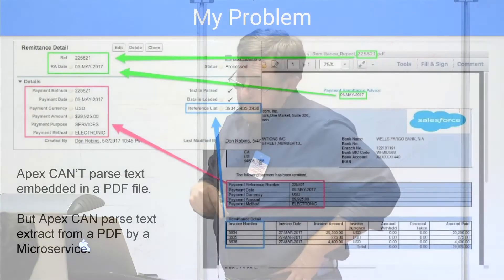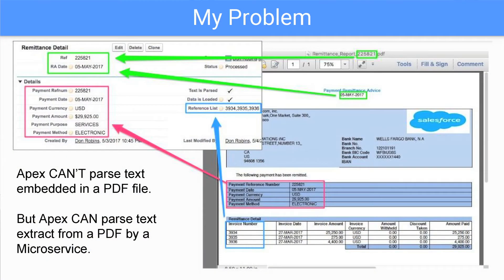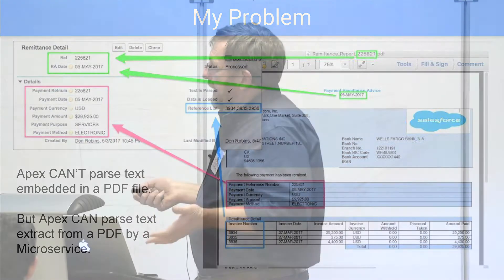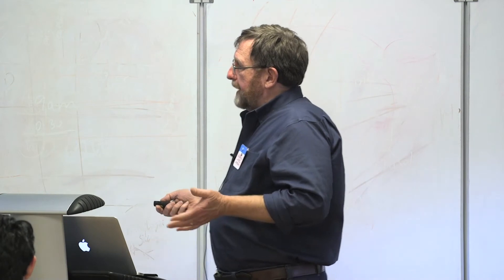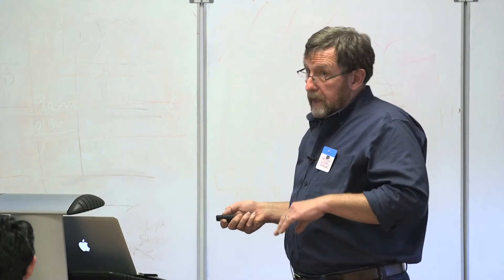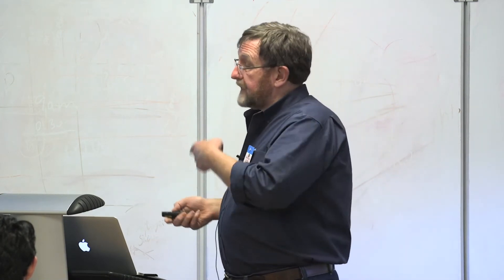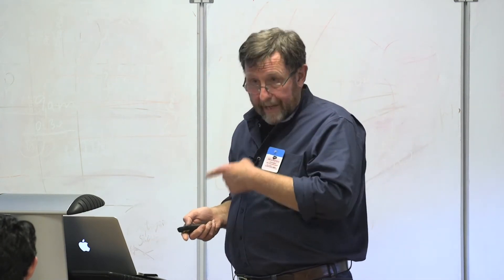You can use Visualforce to generate a PDF. I know somebody who actually was able to scrape some information out of the blob — the binary information — and he was successful, but I wasn't going to try because I needed about a dozen data points. That's my problem. Apex can't parse a PDF, but Apex can parse the text if you can get the text out of the PDF.